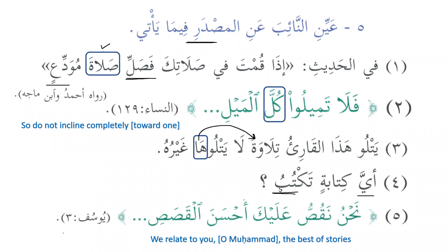The sentence will be taktubu ayya kitabatin — taktubu is fi'l plus fail, and ayya will be maf'ul bihi. Since it is a question word, it should come at the beginning of the sentence, and that's why it is mansoob. We have also learned that kullun, ba'dun, and ayyun are used as the deputy of the masdar, so ayya kitabatin taktubu means: what kind of writing are you doing?